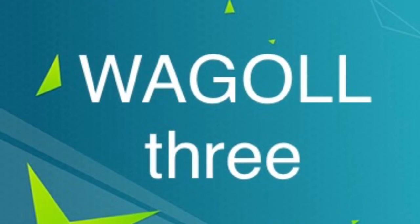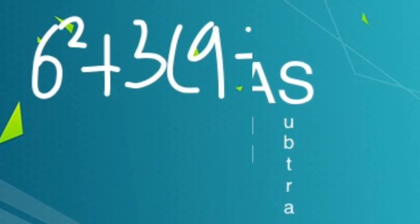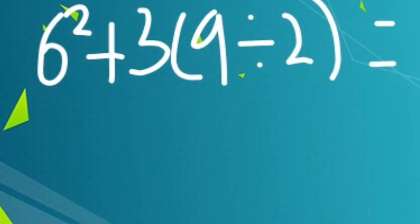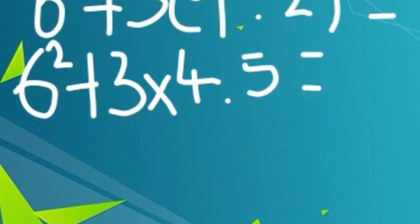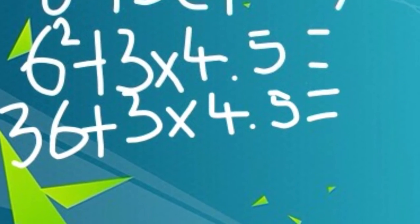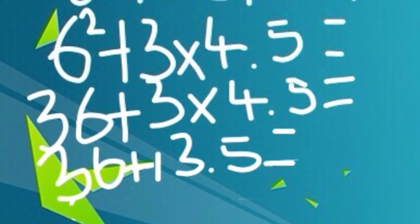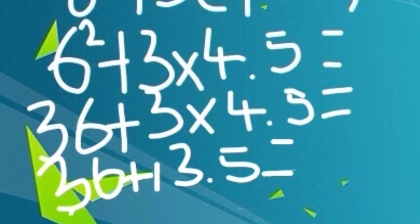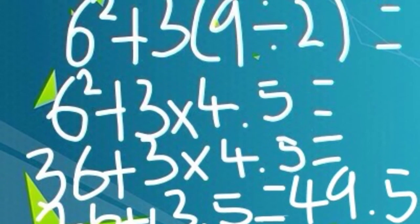Waggle 3, BIDMAS. 6 squared plus 3, brackets 9 divided by 2, equals 6 squared plus 3 times 4.5. Equals 36 add 3 times 4.5. Equals 36 add 13.5. Equals 49.5.